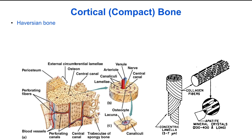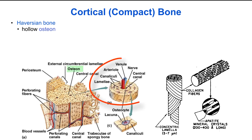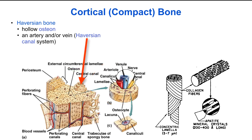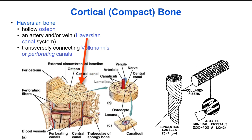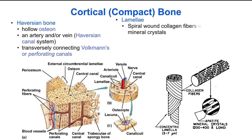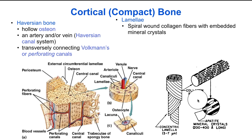The majority of mature cortical bone is haversian bone, consisting of hollow structures called osteons. An artery and/or a vein runs through the center of the osteon via the haversian canals. There are also transversely connecting or perforating canals known as Volkmann's canals. The lamellae or layers consist of spiral wound collagen fibers embedded with mineral crystals.